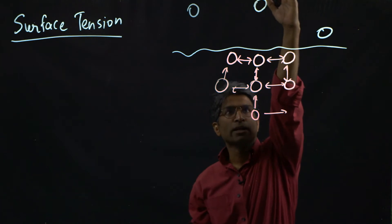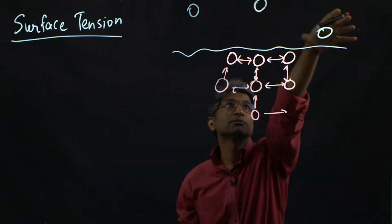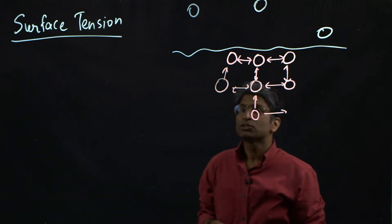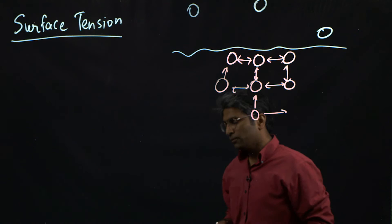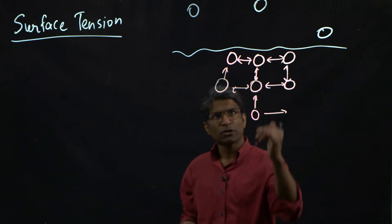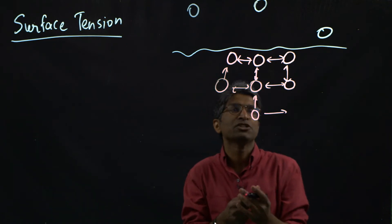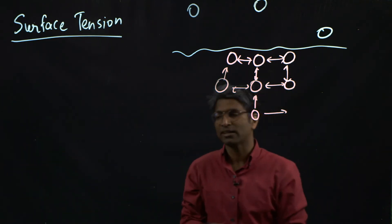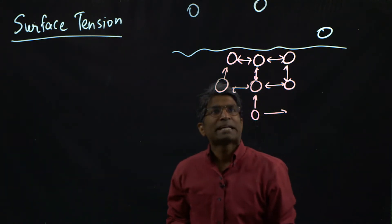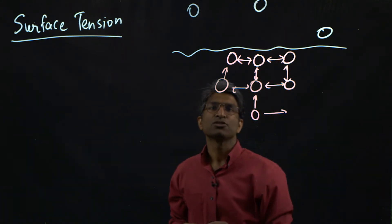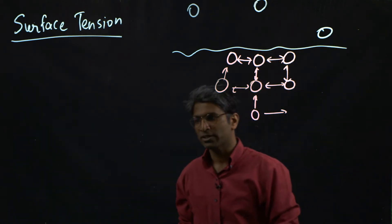On one side, it only has air molecules for company, and those are not, they stay away, right? So there's an unbalanced force on this molecule, and in order for that molecule to be at the surface, it needs to have that additional energy that prevents it from sort of being dragged in. So what this results in is this excess energy at the surface, which molecules on the surface have to have to be present at the interface.